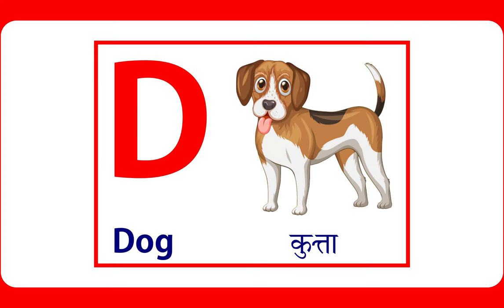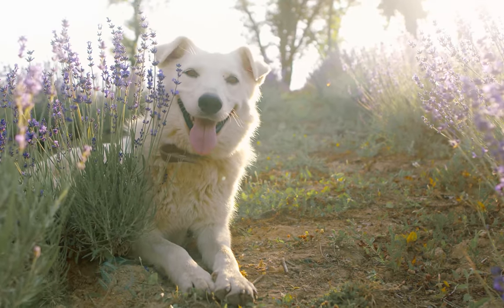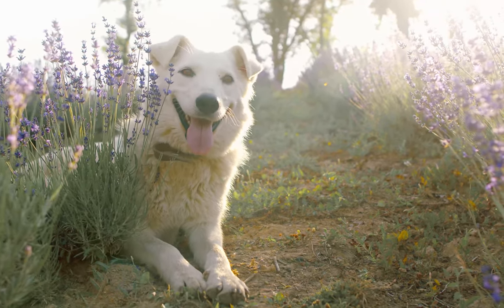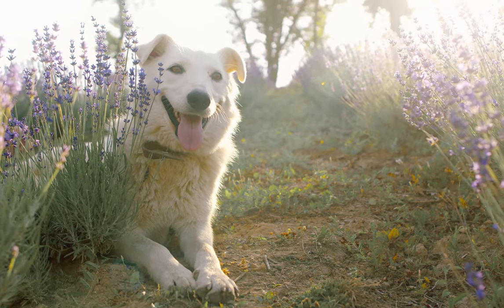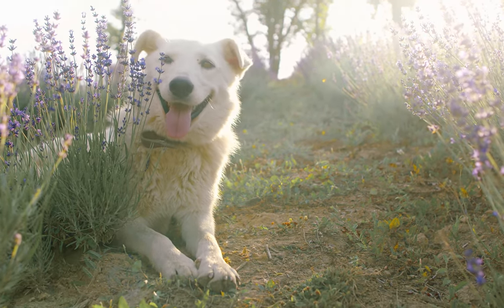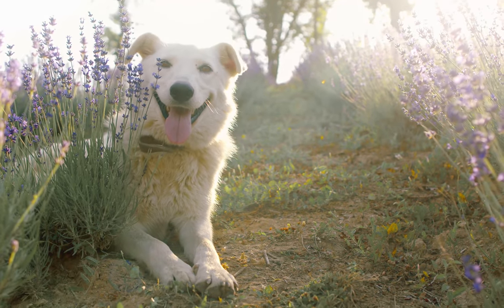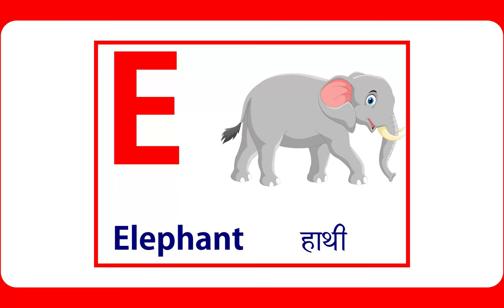D is for dog. Dog is a pet animal. E is for elephant. Elephant lives in the forest.